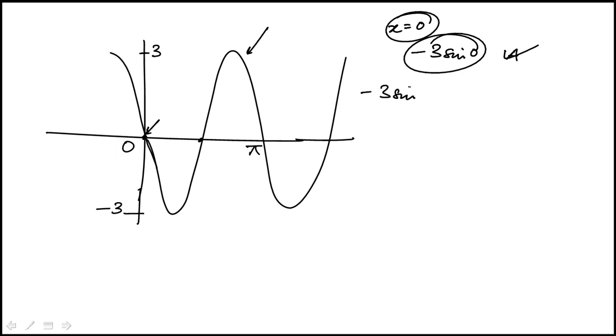b would be minus 3 sine minus pi over 2. This is going to be minus 3 times minus sine pi over 2. Sine pi over 2 is 1. This is going to be 3. So that doesn't work because it needs to be 0. So b is out.